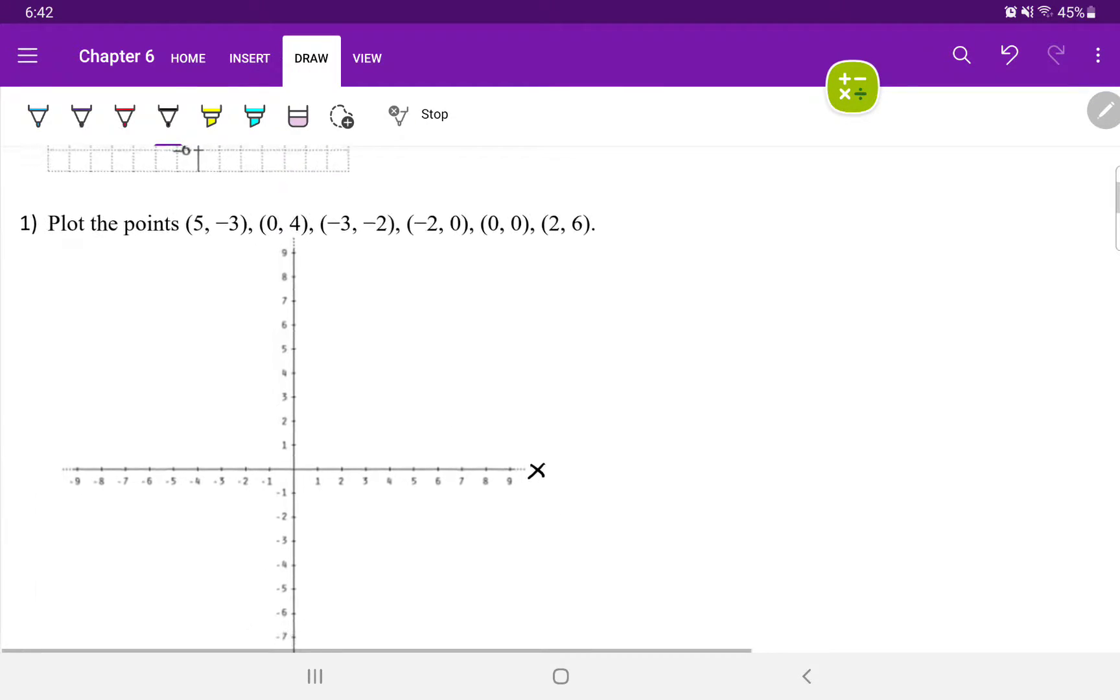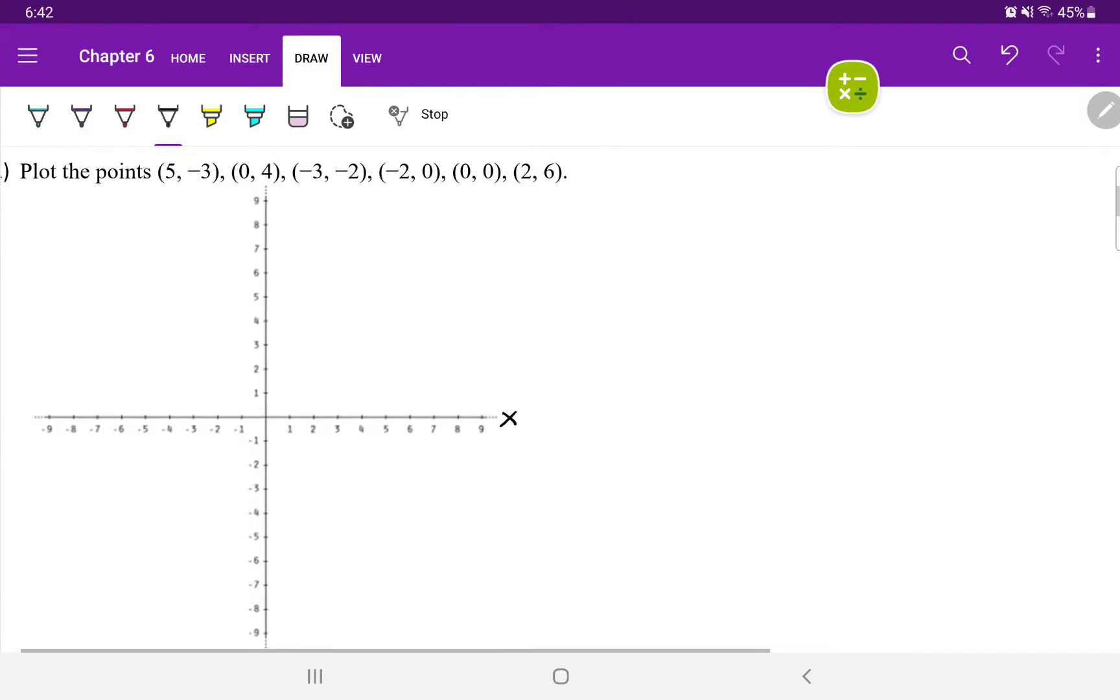For question number one, we want to plot the points. So, let's first label our axes. This is the x-axis. This is the y-axis. Let's plot each point. Now, to plot a point, you want to start in the origin. Start at the origin, and you want to move in the direction that's indicated by the x-value and the y-value.